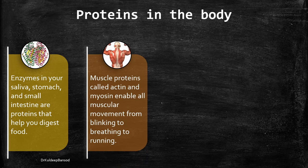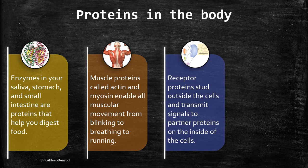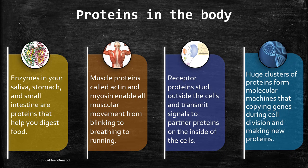Moreover, enzymes which catalyze reactions are also protein in nature. Muscle proteins like actin and myosin are also proteins. There are some receptor proteins, and lastly the huge cluster of proteins — molecular machines — that copy genes during cell division and make new proteins.